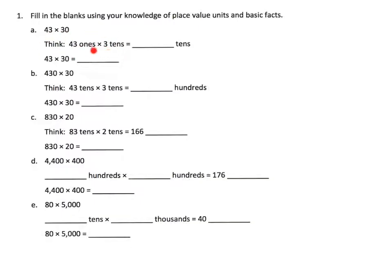Let's start with A. It says 43 times 30 and they want us to think about this as 43 ones times 3 tens. So 43 ones is another way of saying 43 copies of one, times three tens, so that means three copies of 10.